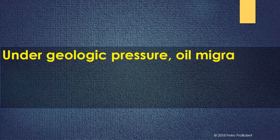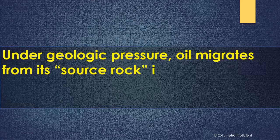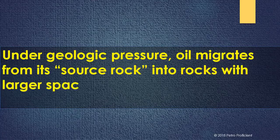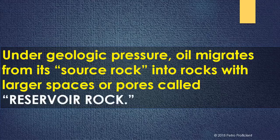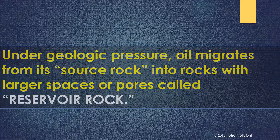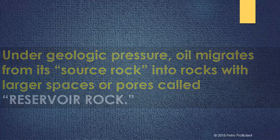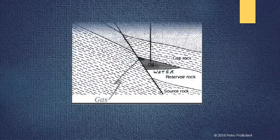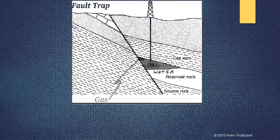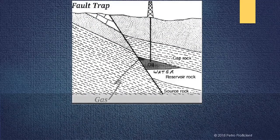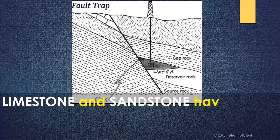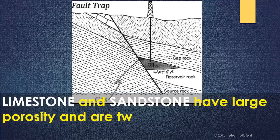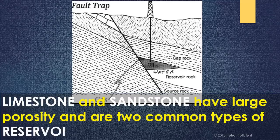Under geologic pressure, oil migrates from its source rock into rocks with larger spaces or pores, called reservoir rock. Limestone and sandstone have large porosity and are two common types of reservoir rock.